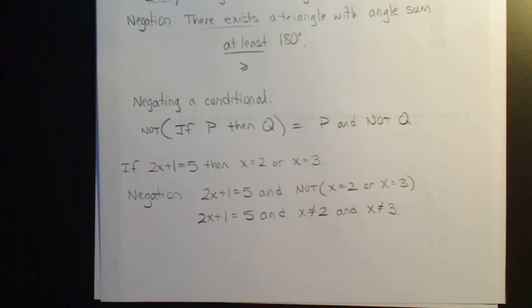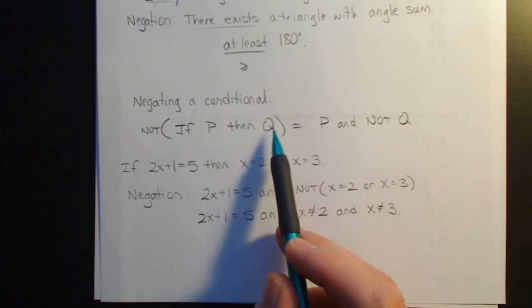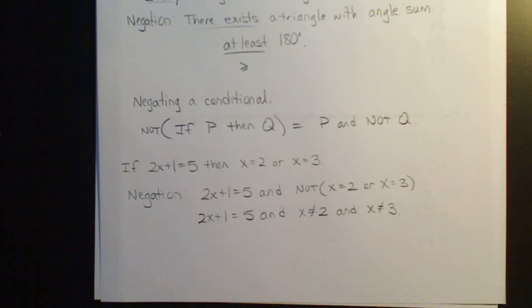Sometimes I'll have claims, or I'll ask you to prove a claim, an if-then claim is false, in which case you need to find something that makes P true but Q false. That's how you negate an if-then statement.